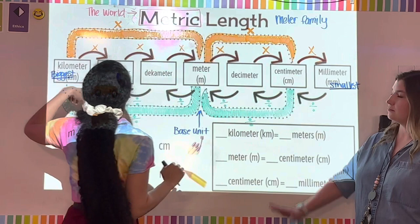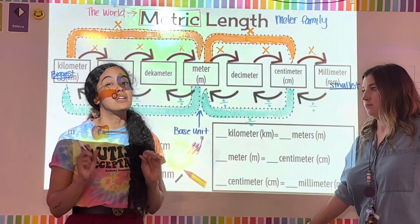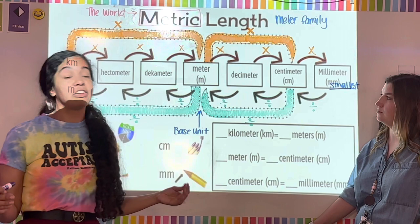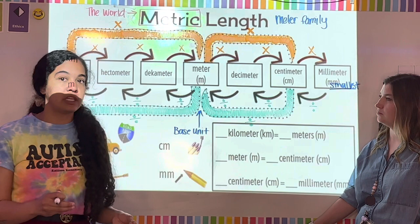When you are going from left to right, you are going to be multiplying. Now, the metric highway looks a little different than the ones before. In fifth grade, we're not going to need to jump as many times.